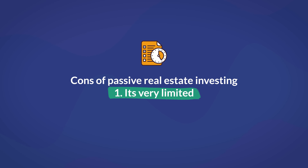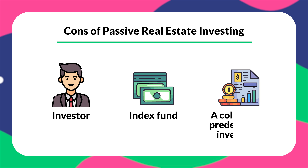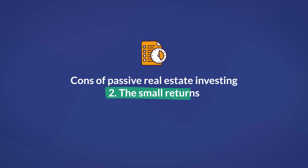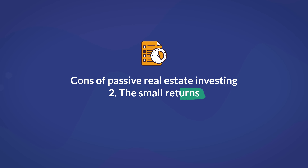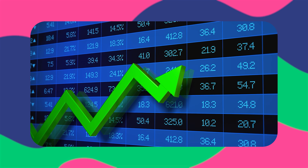Here are some cons of passive investing. It's very limited: investors are limited on what they can invest in — when investing in an index fund, for example, the investor doesn't choose which assets are being invested in, only the collection of predetermined investments they hope will yield a profit. Small returns: passive investors also suffer from smaller returns compared to active investors due to the much less risk and scale involved. However, these small returns can add up over the years, and countless investors grow small monthly contributions to large sums of money by the time they retire.